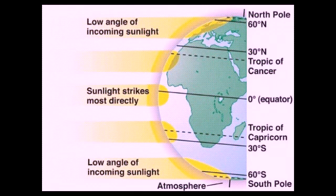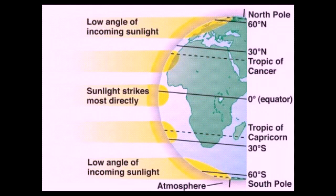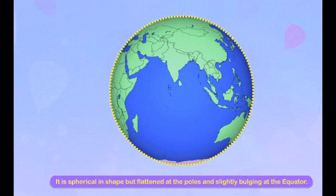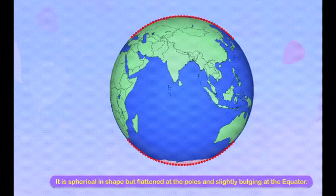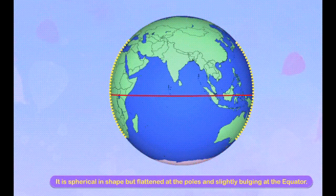The earth receives sunlight from the sun, but the area it strikes is not the same everywhere. The places near the equator receive direct sun rays, which cover smaller areas, and therefore the heat is maximum. As we go towards the poles, the sun rays become slanting, they cover more area, and the heat received is less. On the basis of this, the earth is divided into heat zones.